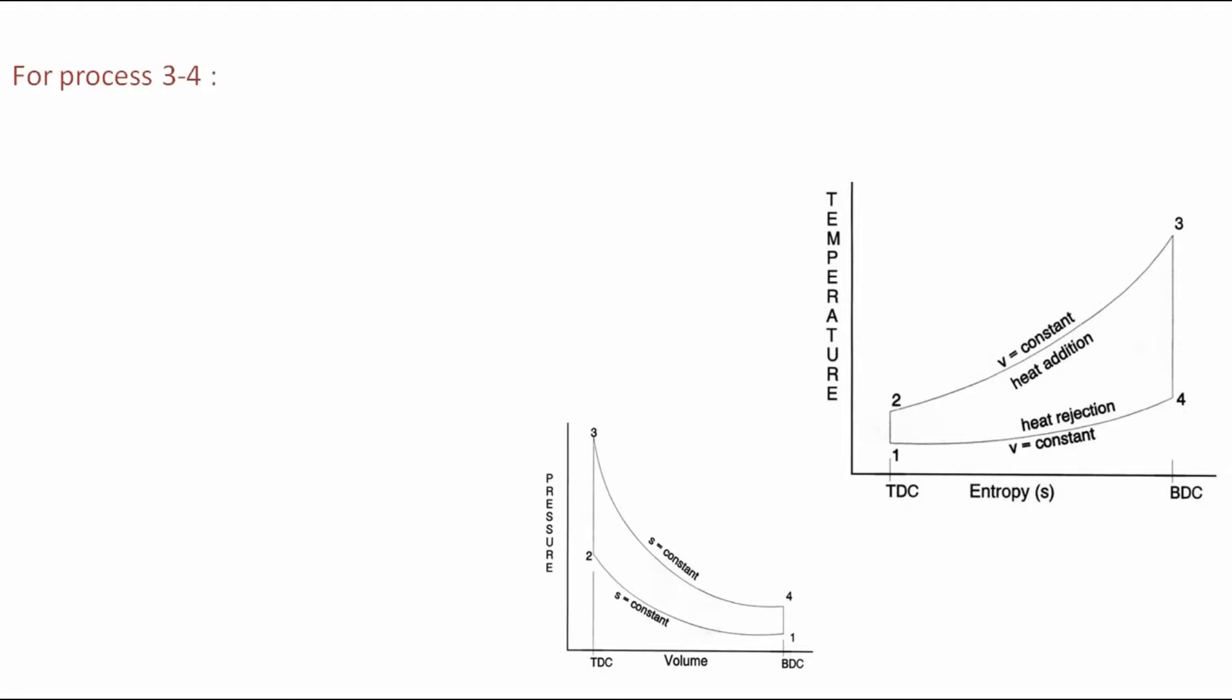For process 3 to 4, T3/T4 is equal to (V4/V3)^(k minus 1) that is equal to volume at BDC by volume at TDC whole power k minus 1 that is equal to r^(k minus 1). Then T2/T1 is equal to T3/T4 or T3/T2 is equal to T4/T1 then efficiency is 1 minus 1 by r^(k minus 1).